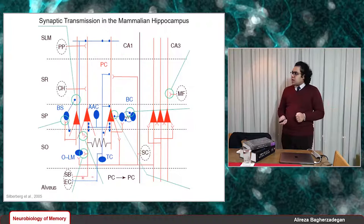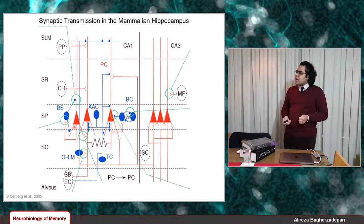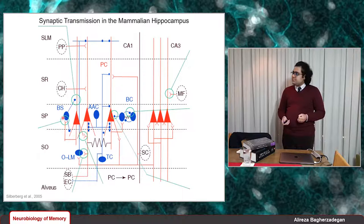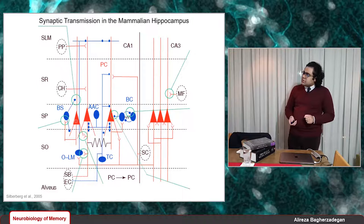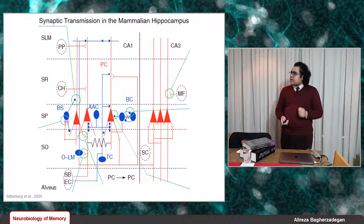For excitatory-to-inhibitory connections in CA1, interneurons receive feed-forward excitation from Schaffer collaterals from CA3 pyramidal cells. They also receive excitatory connections from local pyramidal cells and form feedback inhibitory connections. For example, a pyramidal cell sends an excitatory input to a bistratified cell, and that bistratified cell then inhibits the same pyramidal cell from which it received the excitatory input — a recurrent or feedback inhibition.